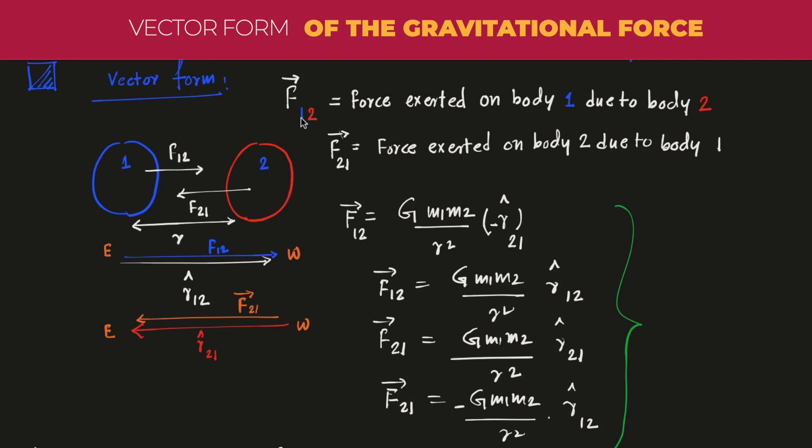For example, here I have drawn F12. That means force exerted on body one due to body two. So you can see the direction of the force and it is very clear that this F12 indicates the force due to two on one.